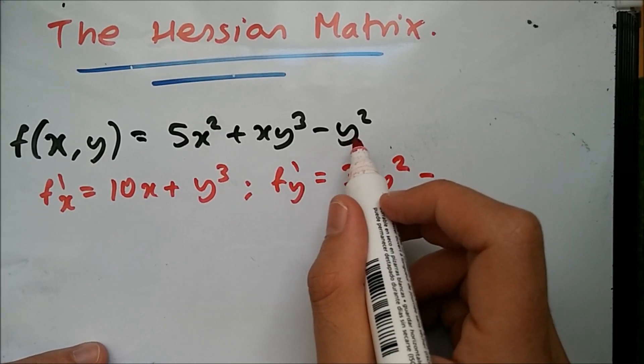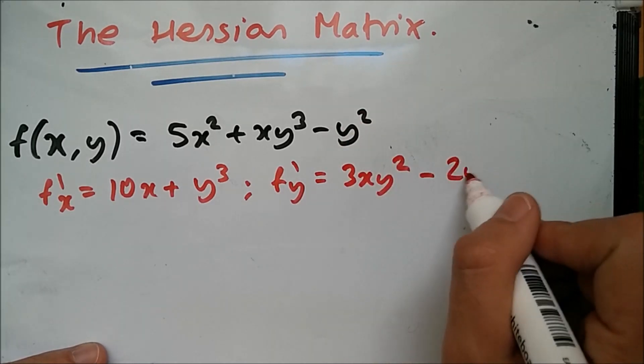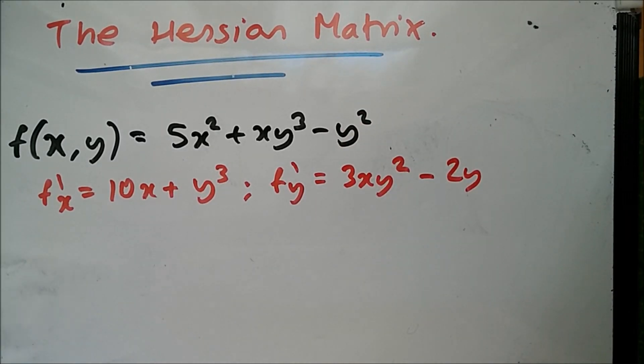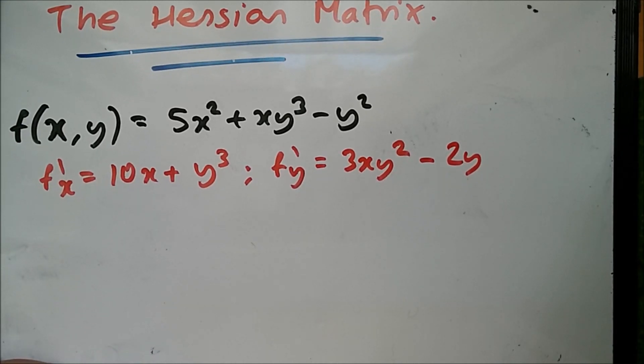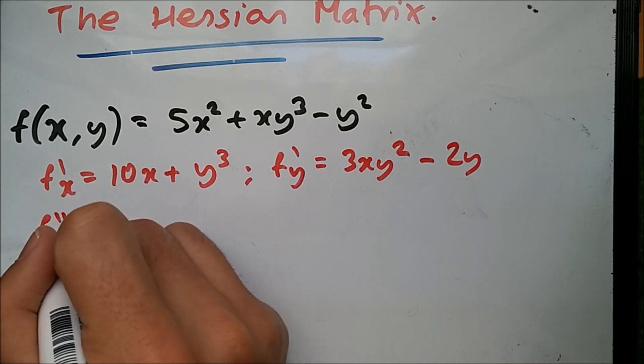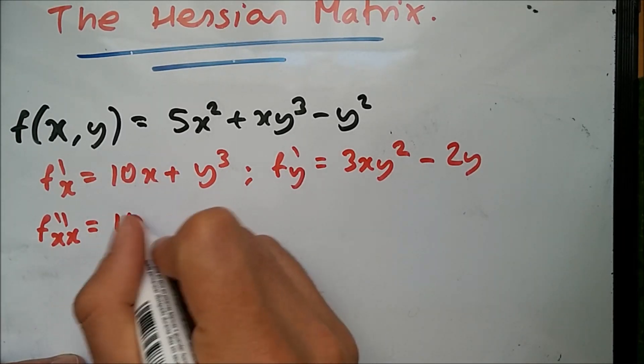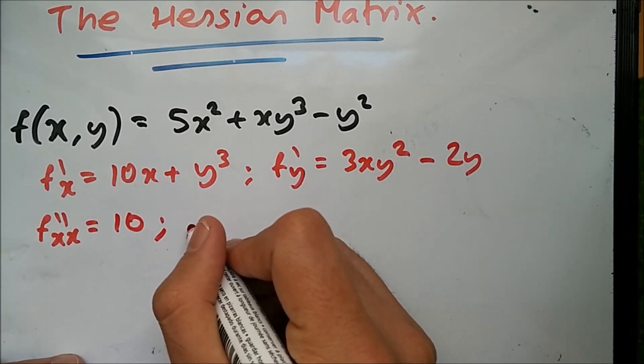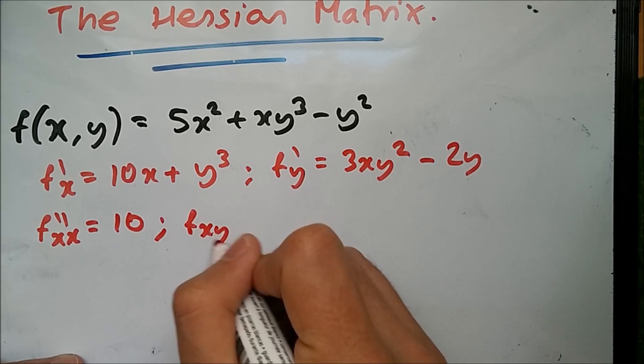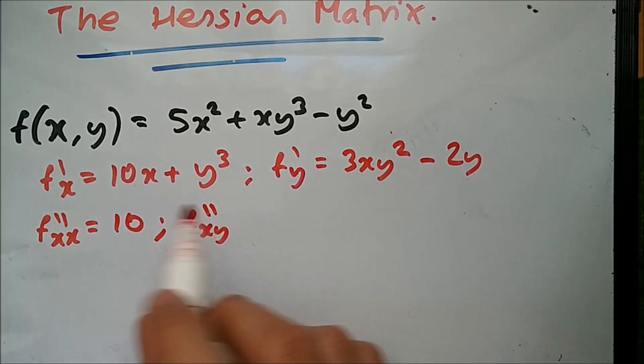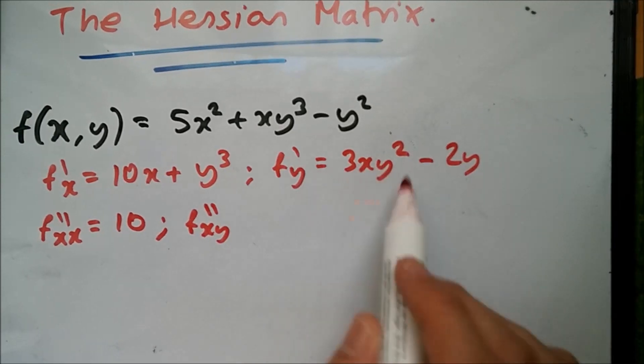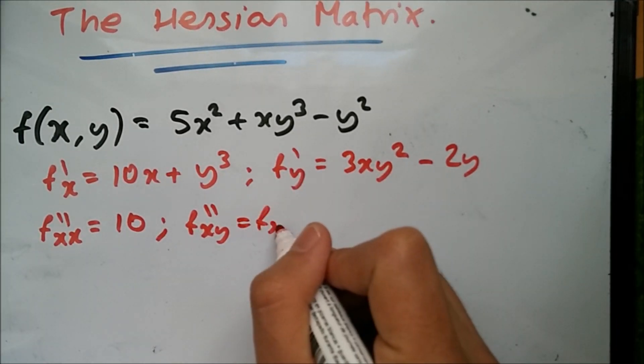Now we compute the second partial derivatives of each one. fxx, differentiating with respect to x, gives 10. fxy, differentiating with respect to y, is the same as fyx, so they both give the same result.